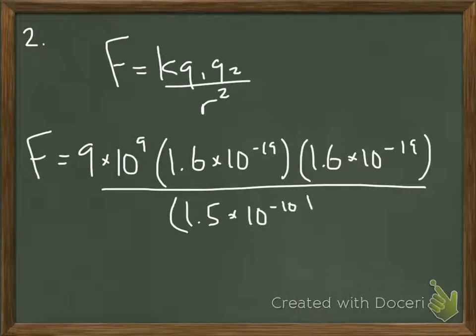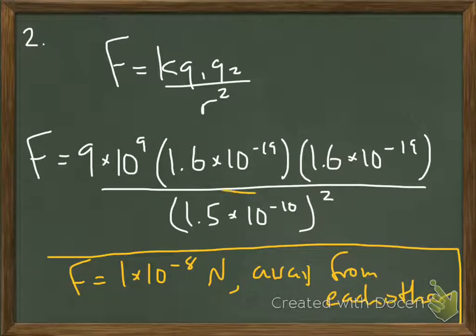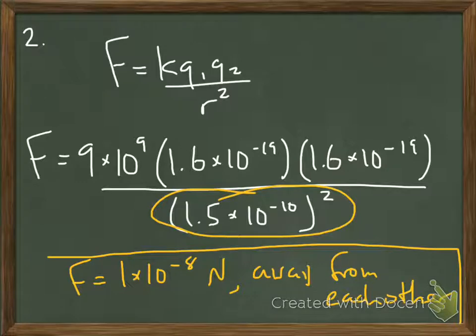We have to know the charge of an electron. And then on the bottom, the radius, the radius means the distance between the two things. So let me stop here for a second. I want to circle the radius down there. We're not talking about the radius as in like half of the diameter of a circle. In this case, radius just means the distance between two charged objects, that's all that is.